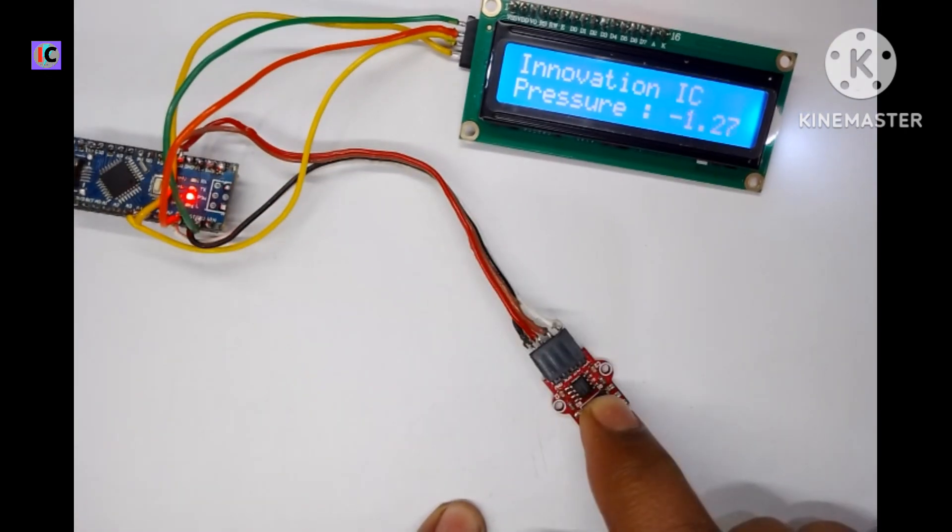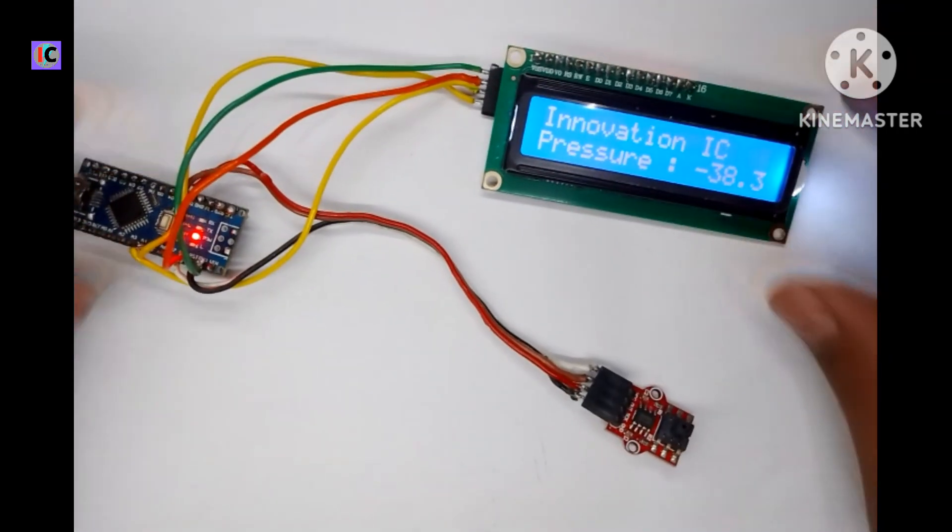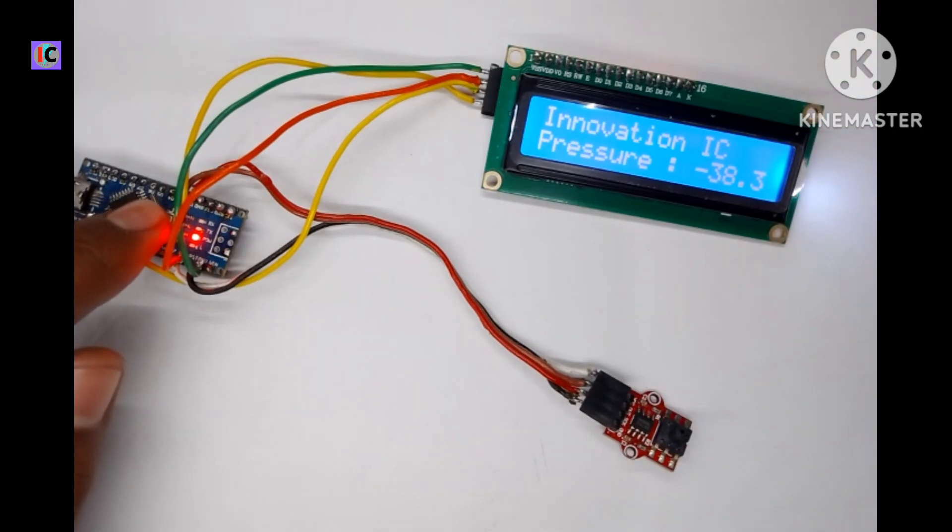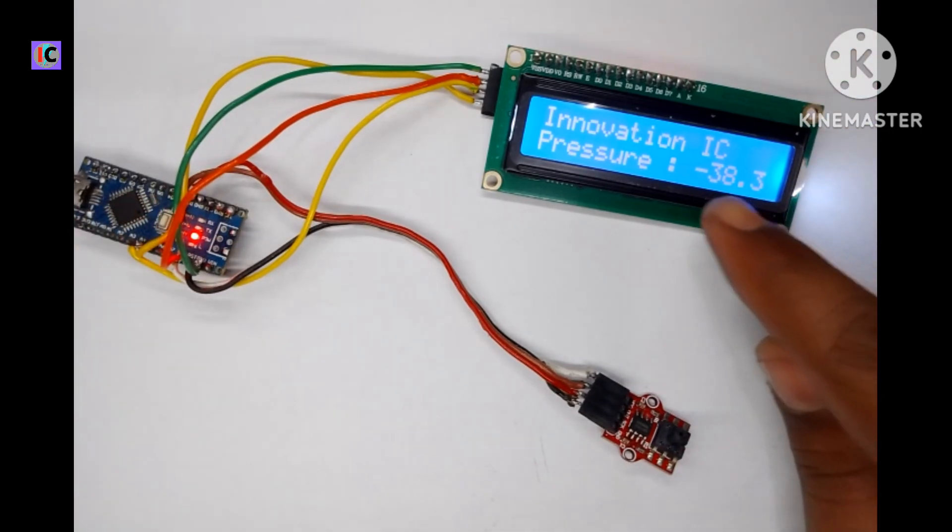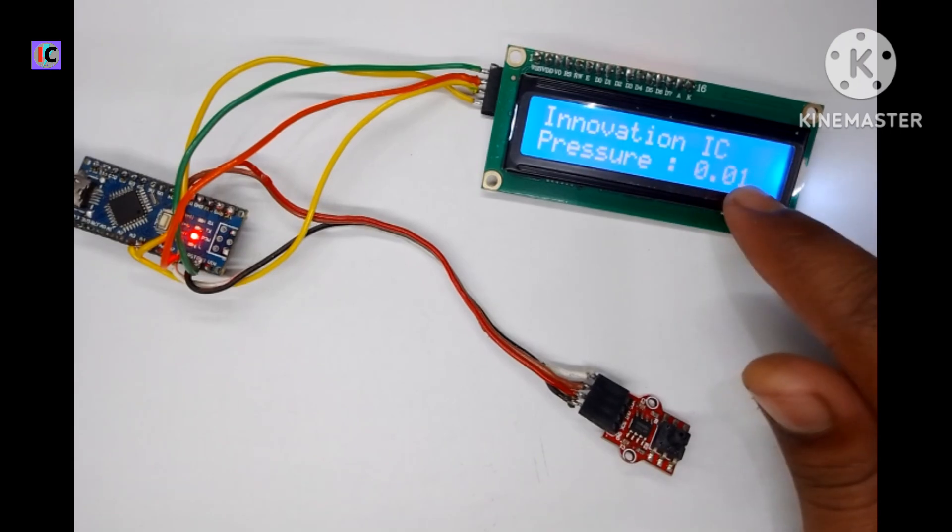If we want to calibrate, just press the reset switch of the Arduino. It will calibrate itself. Now we will press the reset switch - you can see the value becomes zero, which means it will calibrate automatically.